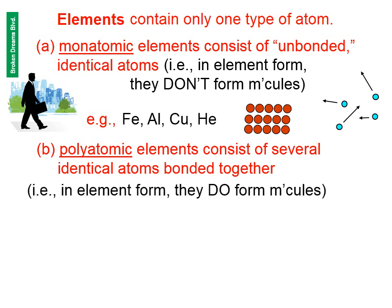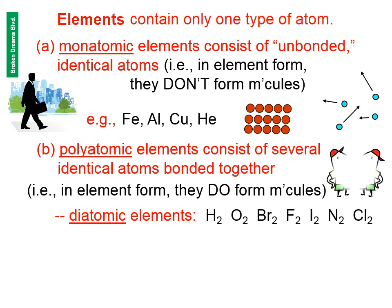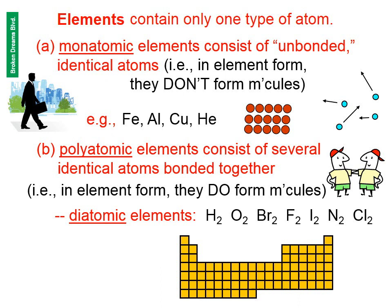Polyatomic elements consist of several identical atoms bonded together. That is, in element form, they do form molecules. The most important of these are the diatomic elements, which are these seven right here. Sometimes we refer to them as the Hoberfinkel twins.